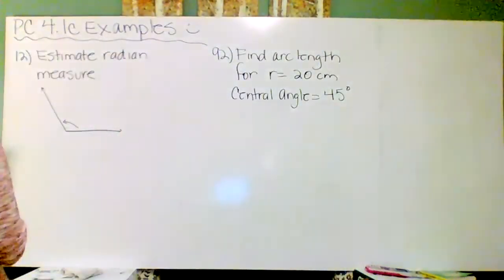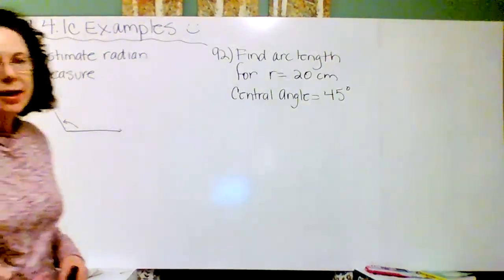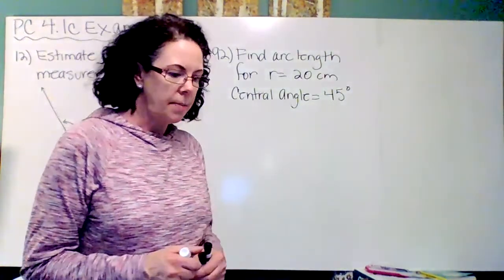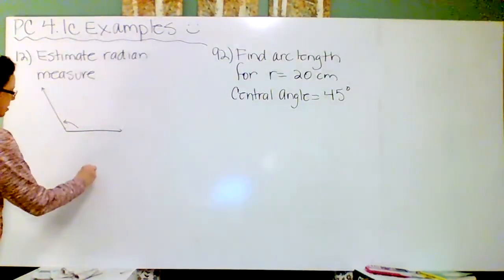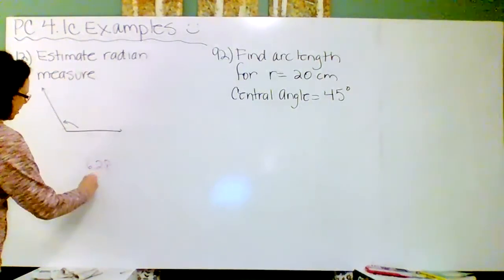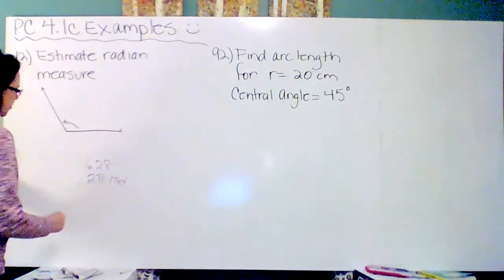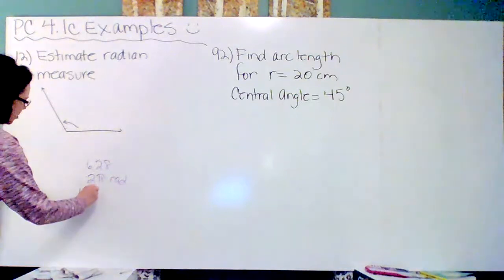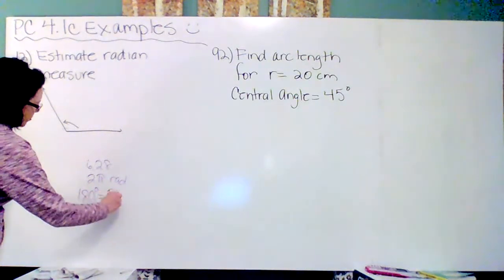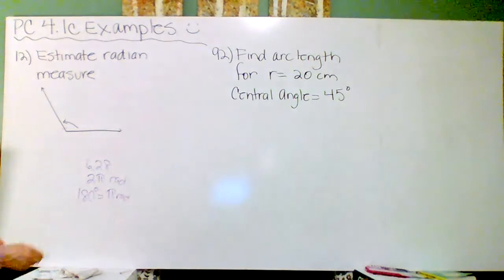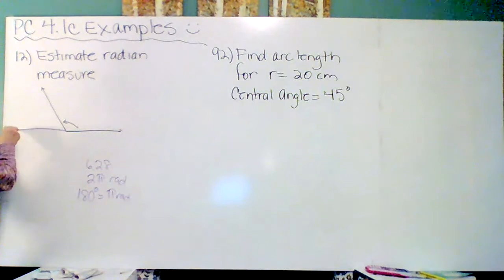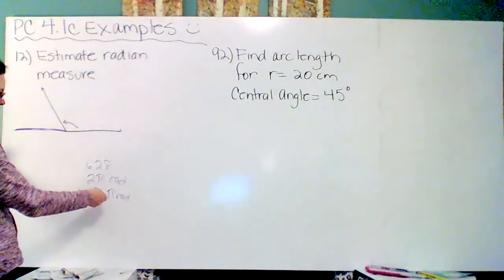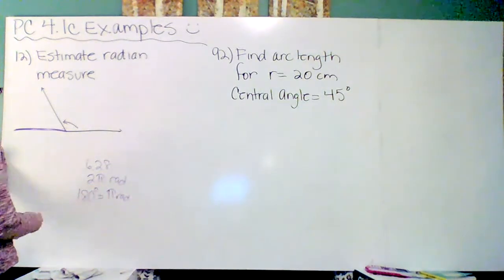Okay. Number 12, estimate radian measure. And I really mean like estimate. So what I do is, because there are 6.28 or 2 pi radians all the way around a circle, and 180 degrees equals pi radians, so about three, a little bit more than three. So all I do is like 180 degrees—that's supposed to be a straight line.